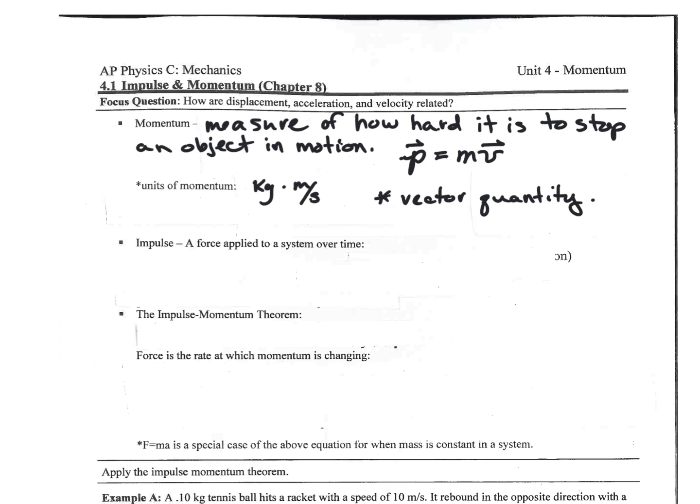There's a difference between momentum and impulse. Impulse is a force. Something rolling along the floor has momentum. Impulse is more like what happens when you bounce a rubber ball on the floor — the ball is in contact with the floor for a very short period of time, but it's a very rapid change in that momentum. So an impulse is a force applied to a system over time. Impulse is J, and J is force times time.